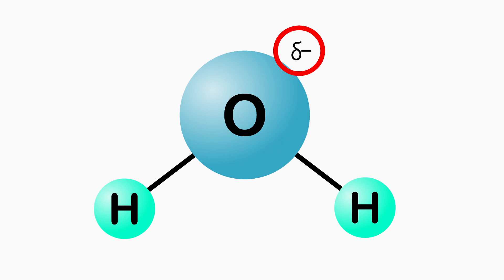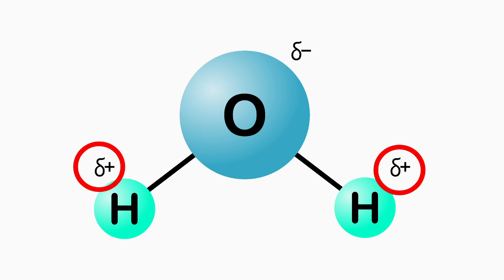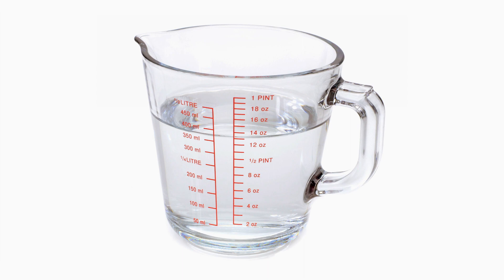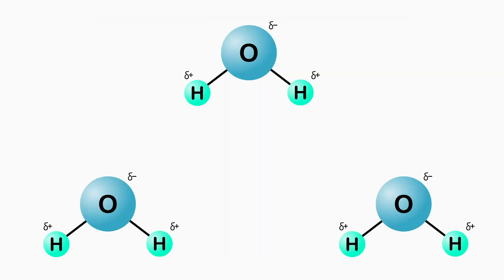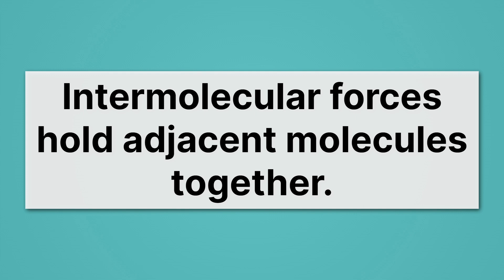If oxygen is a little negative, what does that mean about hydrogen? That means hydrogen has to be a little positive. Things get more interesting when we remind ourselves that in a cup of water, we don't have one water molecule — we have a bunch of water molecules. Because the hydrogens are positive and the oxygens are negative, there are going to be attractive forces between them. These are intermolecular forces, and what they do is hold those water molecules together. Intermolecular forces hold adjacent molecules together.